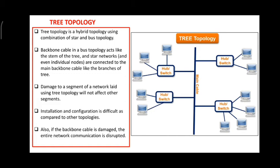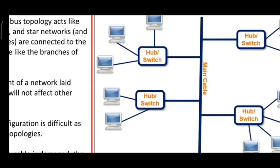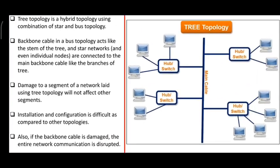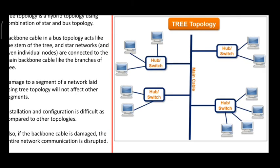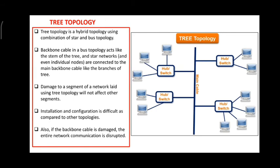Finally, tree topology is the combination of bus and star topology. As seen in the picture, there is a main cable right in the middle — a vertical line — representing the bus topology. On both left and right hand sides, there are star topologies connected to it. Tree topology equals one bus topology plus a collection of star topologies.